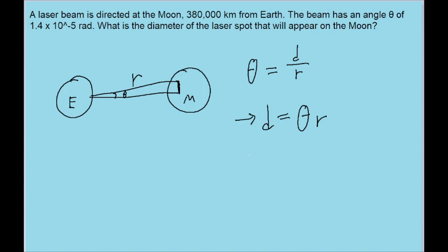We're given 1.4 times 10 to the power of negative 5 radians for theta, so that's what we put in for theta.